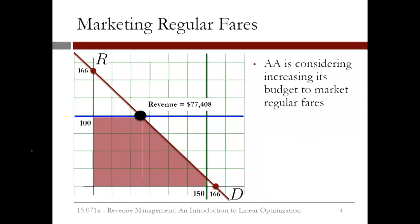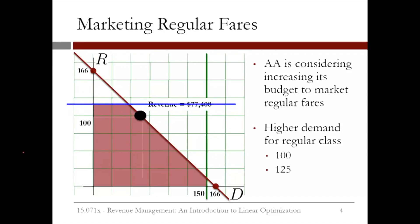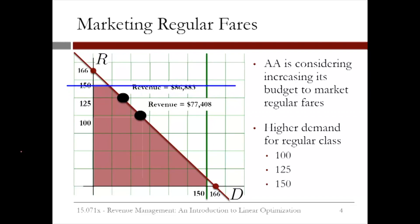Now let's look at what happens when we market regular fares. If we increase the demand for regular fares, our revenue increases. If we increase by 25 units of demand, our revenue increases to $86,883. If we increase by another 25 units of demand, our revenue increases to $96,358.